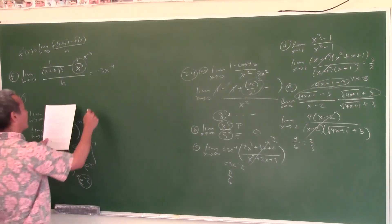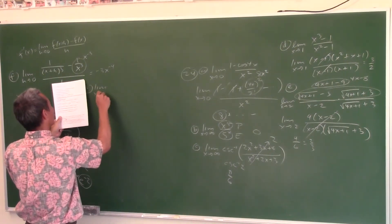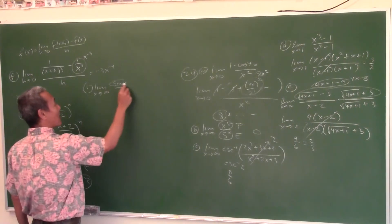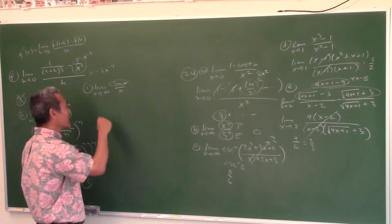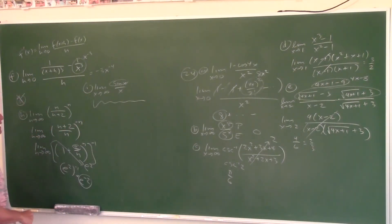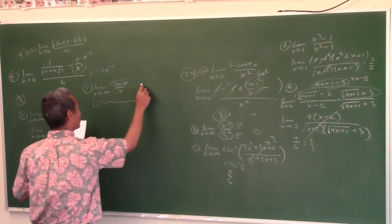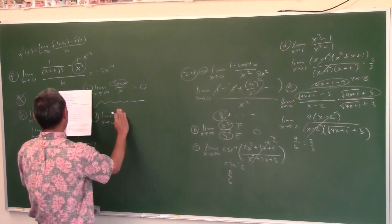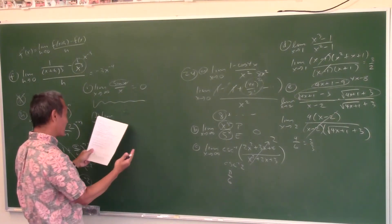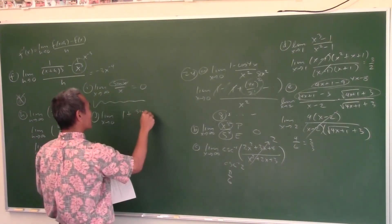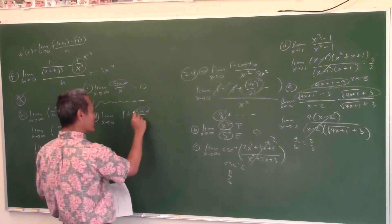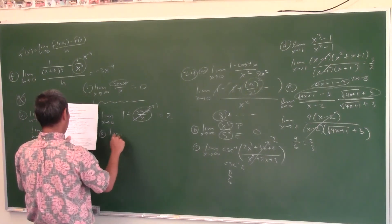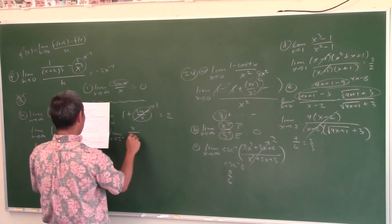Limit as x approaches infinity of sin(x)/x: even though sin(x) oscillates between −1 and 1, you keep dividing by larger and larger numbers, so the limit is 0. For the limit as x approaches 0 of (x + sin x)/x: split into x/x + sin(x)/x = 1 + 1 = 2.